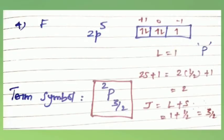Next, calculate the ground state term symbol of the fluorine atom. Fluorine has atomic number 9 with electronic configuration 1s²2s²2p⁵.